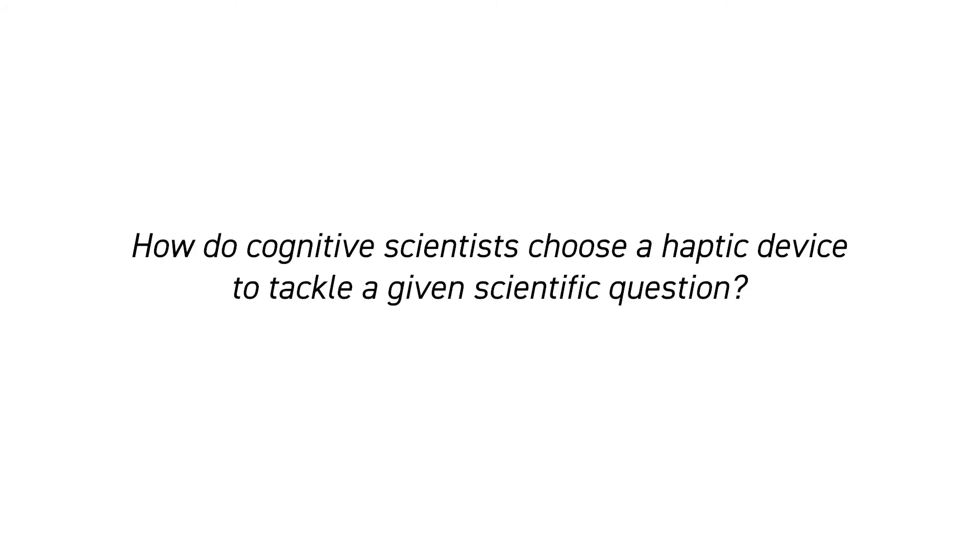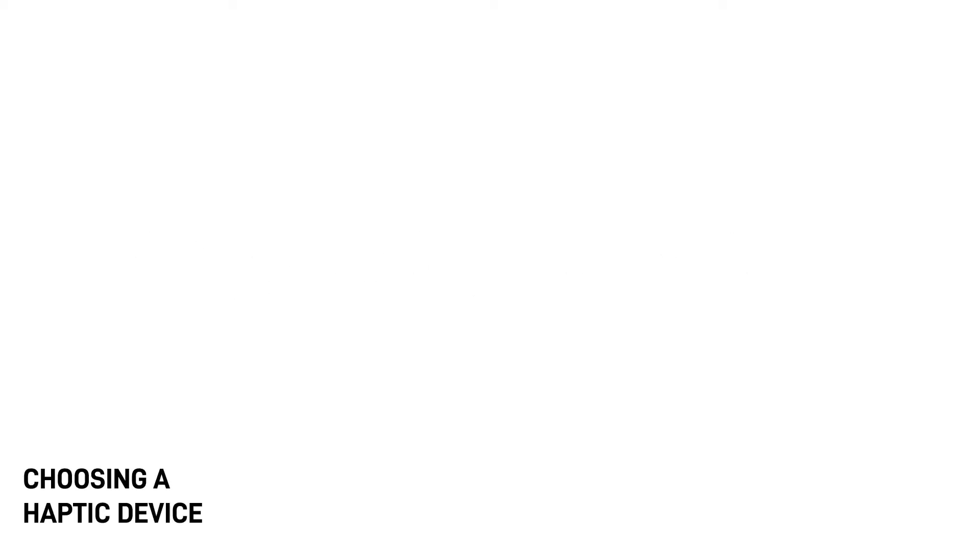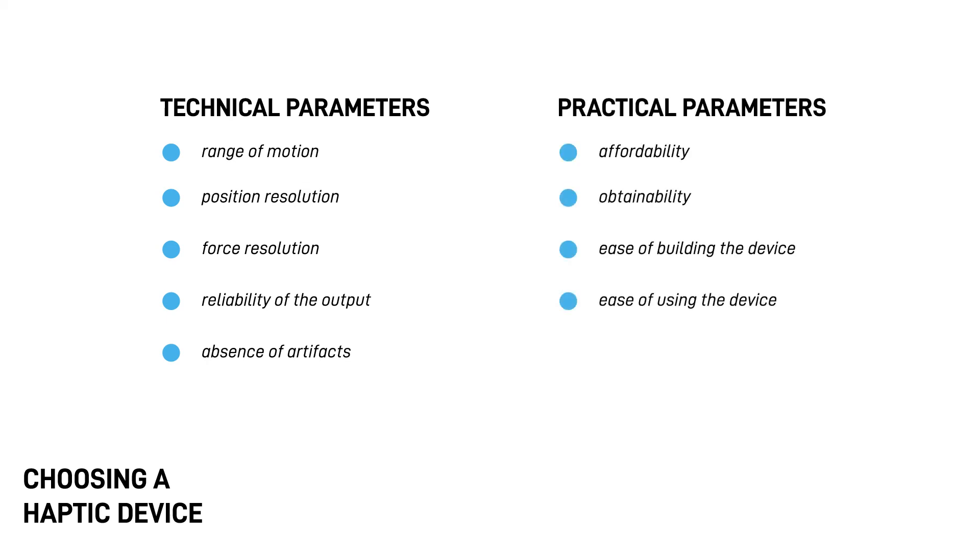You may have noticed that running a perceptual haptic study requires a reliable setup for presenting the stimuli. How do cognitive scientists choose a haptic device to tackle a given scientific question? Many parameters are considered when selecting or building haptic devices for an experiment. Technical parameters include range of motion, position and force resolution, reliability of the output, and absence of artifacts. From the practical point of view, affordability, obtainability, ease of building, and using the device can also be decisive factors.